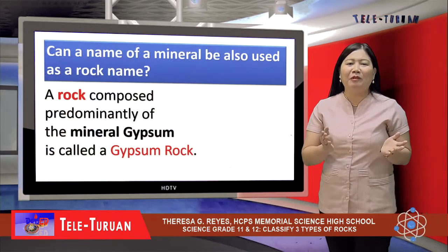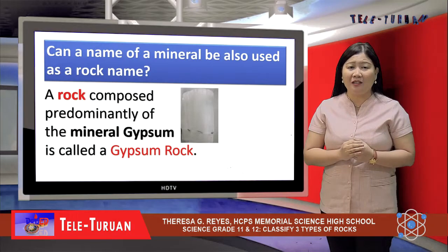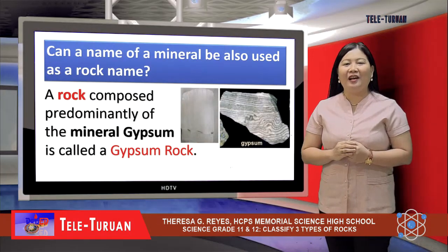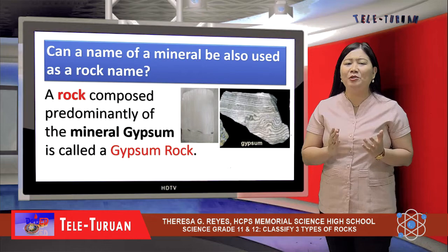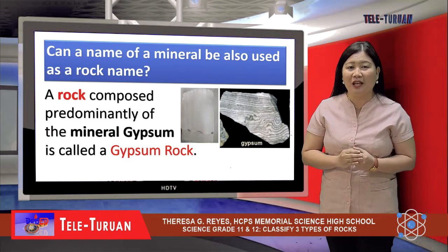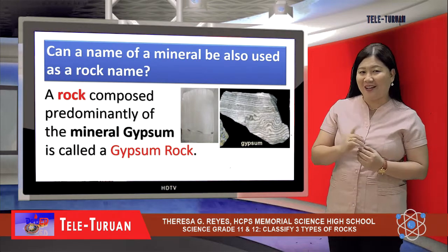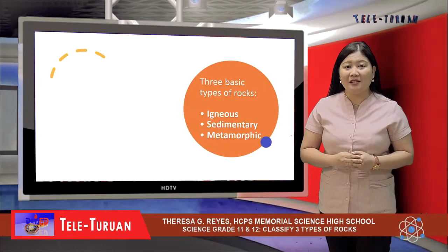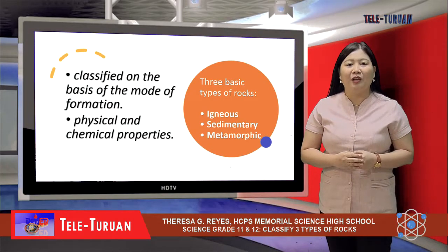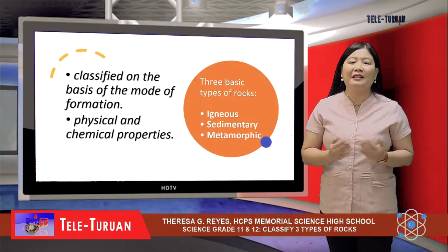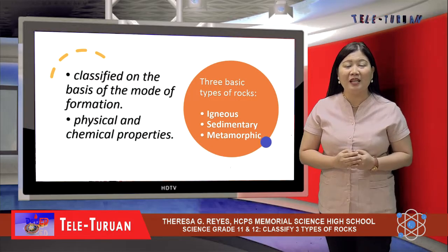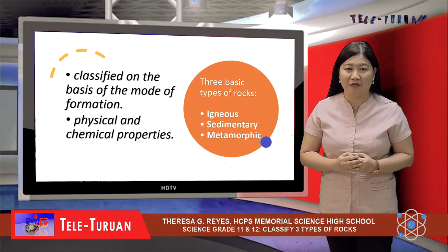Can a name of a mineral be also used as a rock name? The answer is yes. A rock composed predominantly of the mineral chert is called a chert rock. Before we classify rocks, let us identify each type of rocks. There are three basic types of rocks: igneous, sedimentary, and metamorphic.